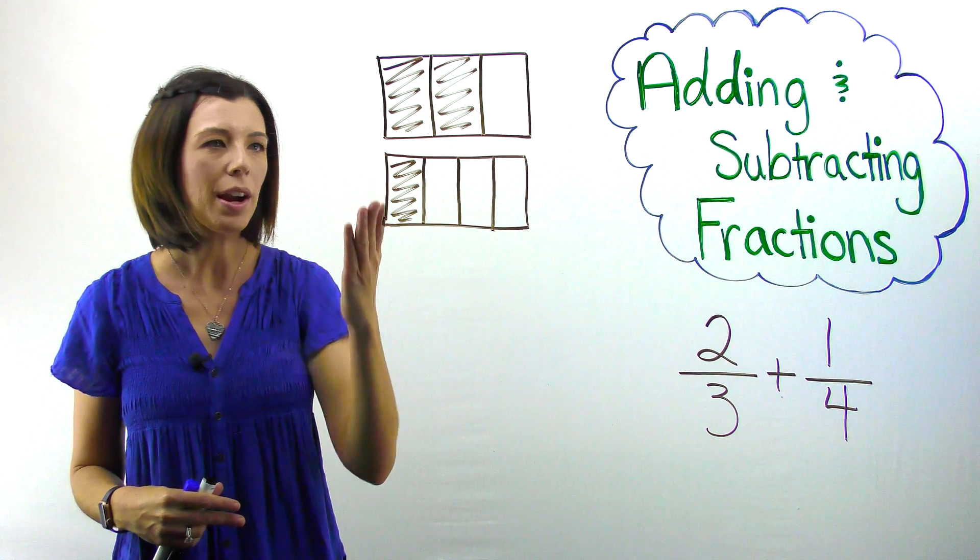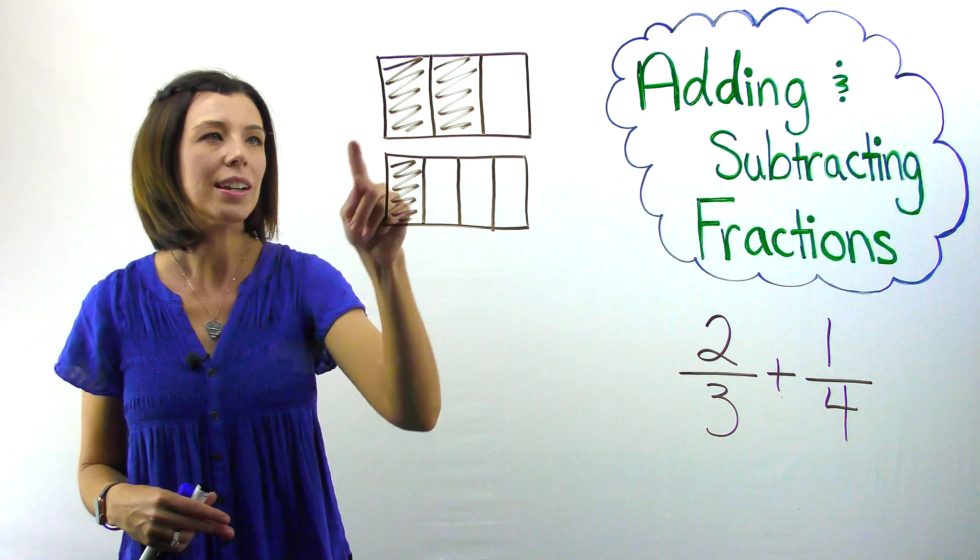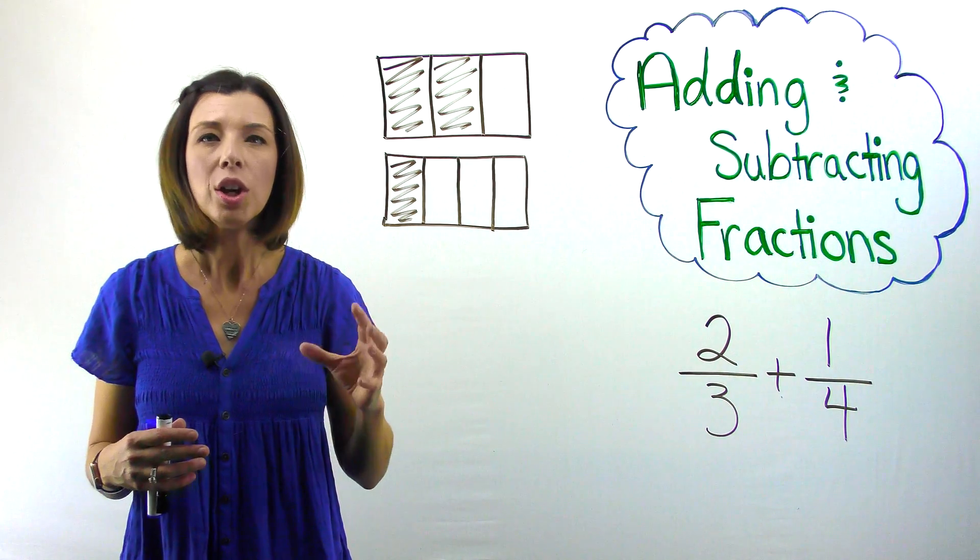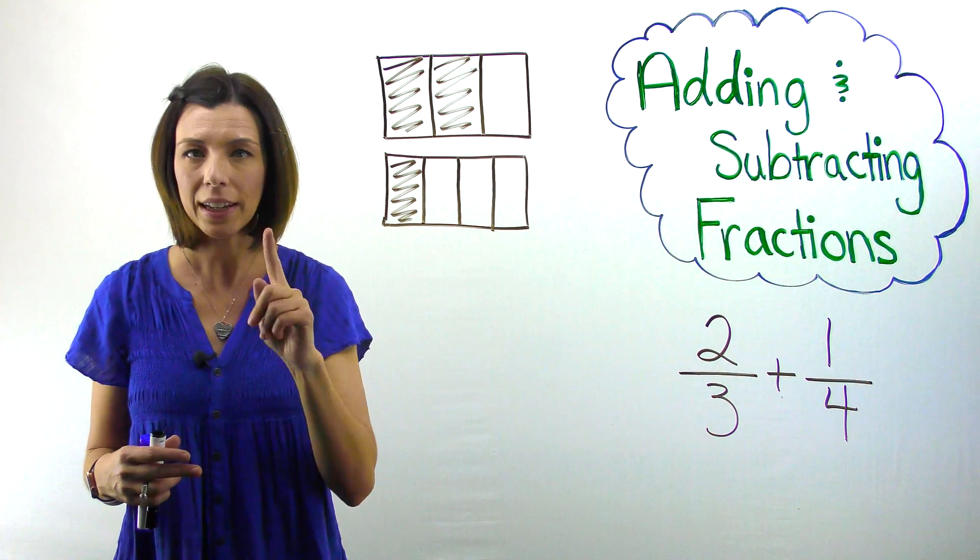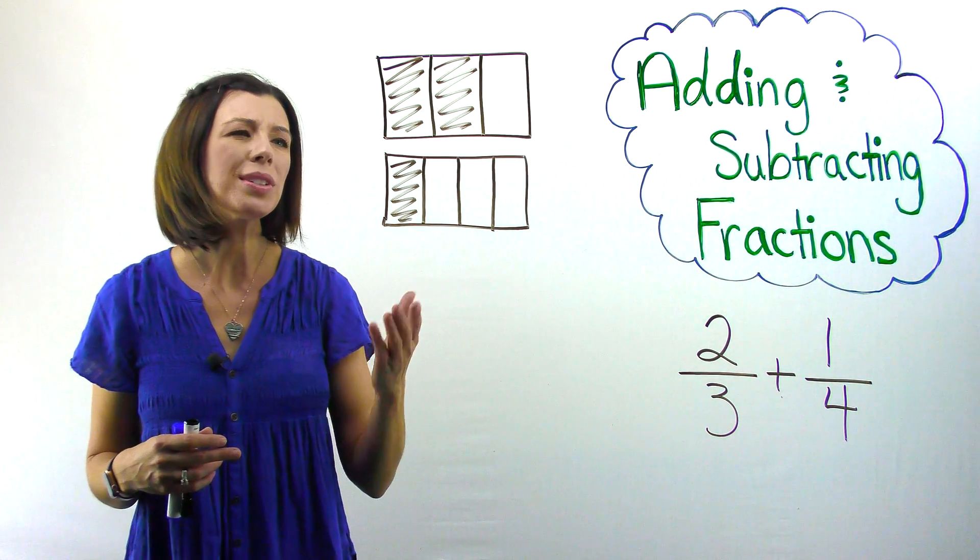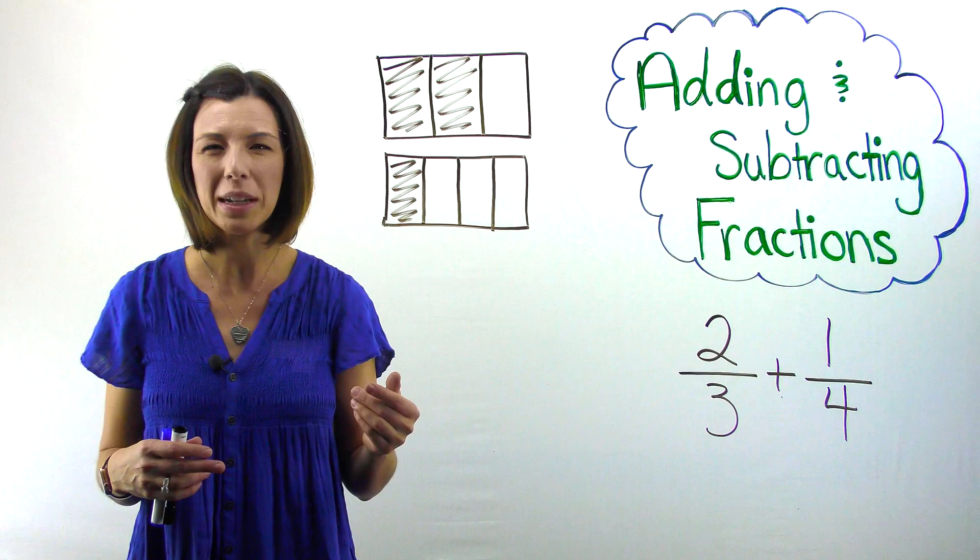You can see that I've drawn both of my addends here. So I have two-thirds and one-fourth. Because this is addition, notice that I'm not erasing like I was with subtraction. I'm adding them together, right? So now what I need to do is I realize that I don't have the same size pieces.